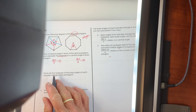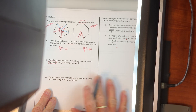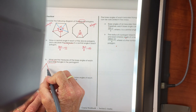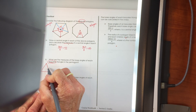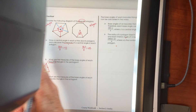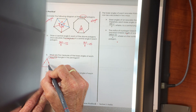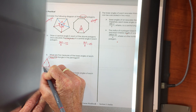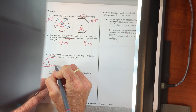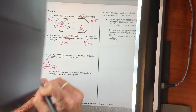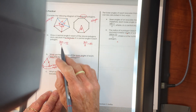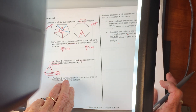What are the measures of the base angles of each isosceles triangle in the pentagon? An isosceles triangle is a triangle with two equal (congruent) sides. It's perfectly symmetrical — if you fold it down the middle it folds onto itself. The two base angles are congruent to each other; they're the angles where the congruent sides touch the third side.